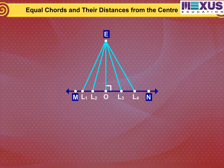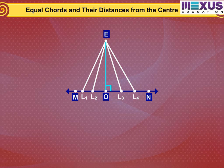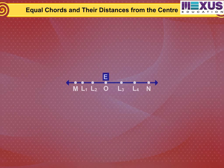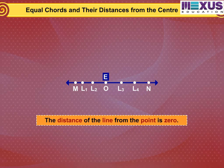You may think a while and get the answer. Out of these line segments, the perpendicular from E to MN, namely EO, will be the least. In mathematics we define this least length EO to be the distance of MN from E. So the length of the perpendicular from a point to a line is the distance of the line from the point. Note that if the point lies on the line, the distance of the line from the point is zero.